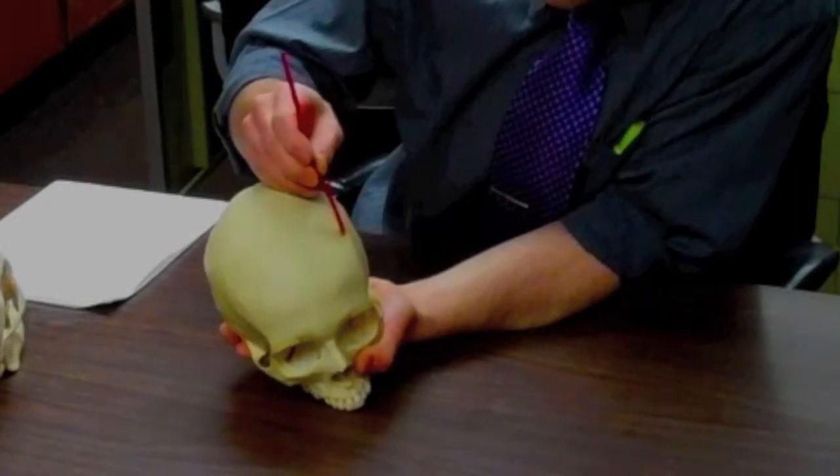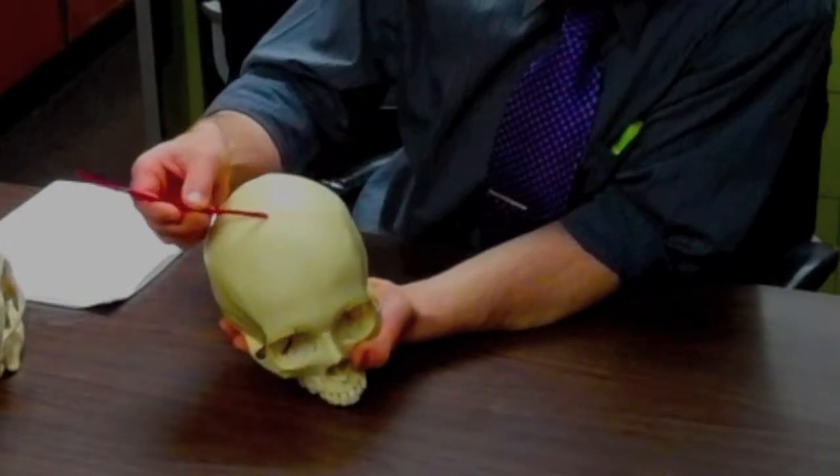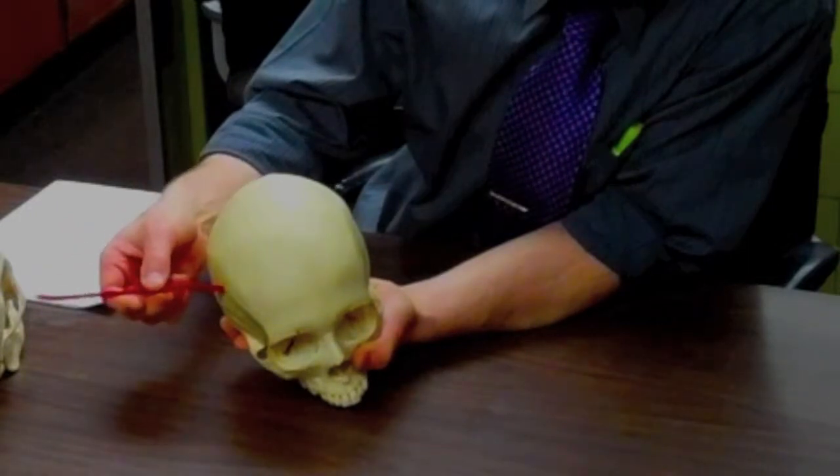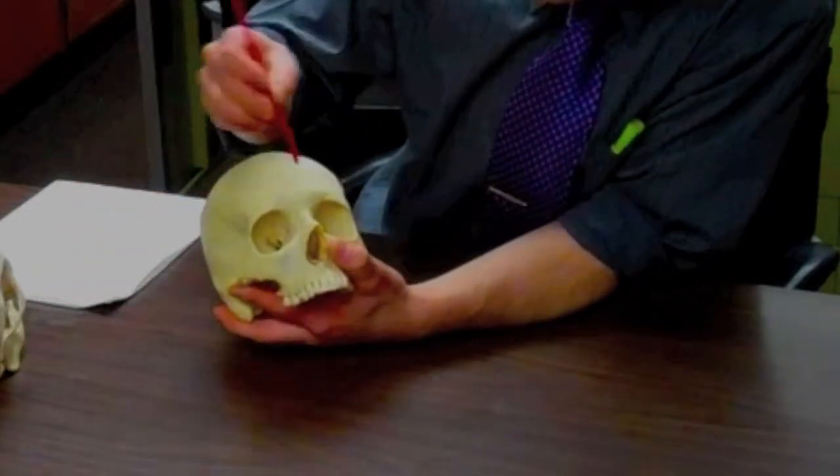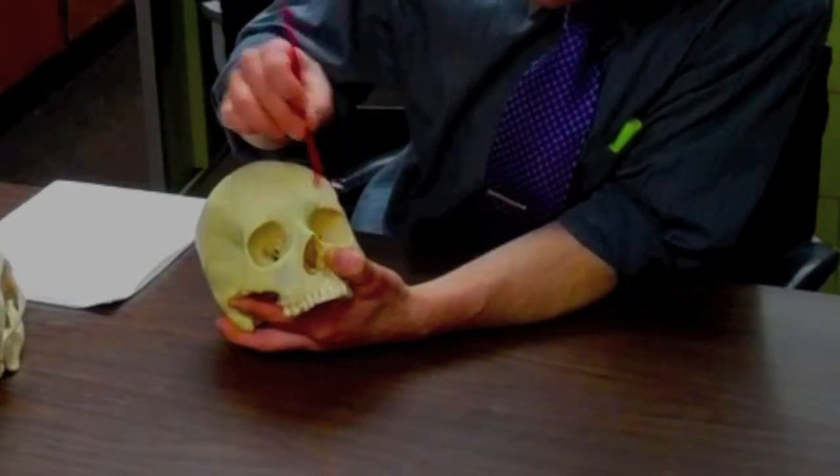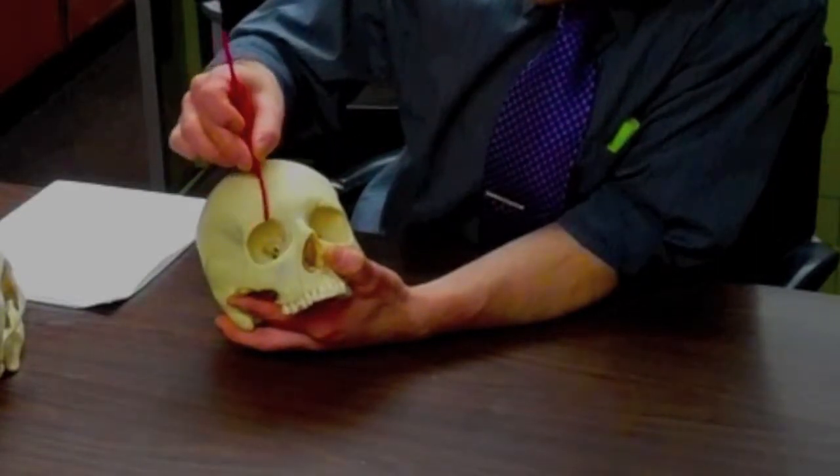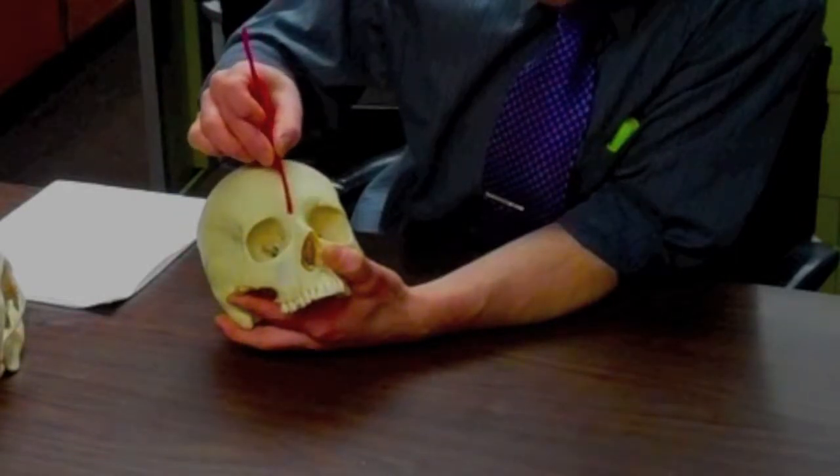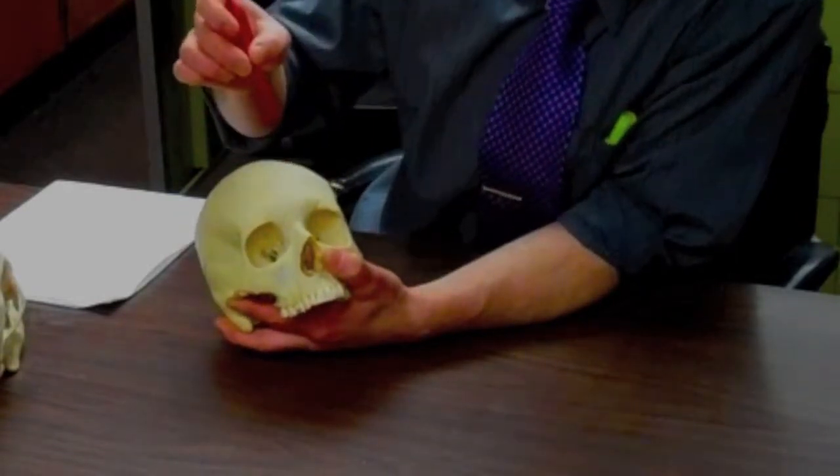The frontal bone stops where the coronal suture is. Here we see the superciliary arches where the eyebrows go, both sides, and in between we have the glabella, which means hairless.